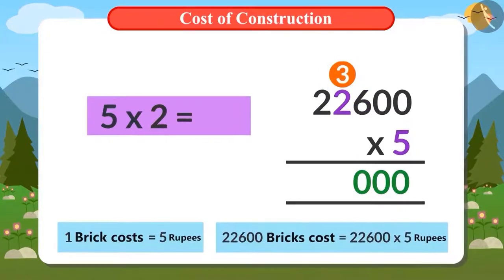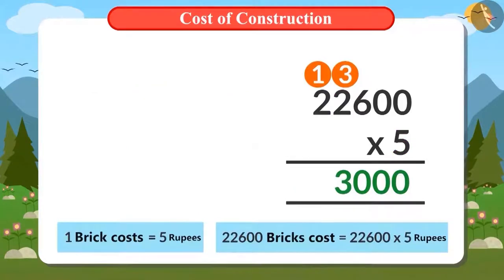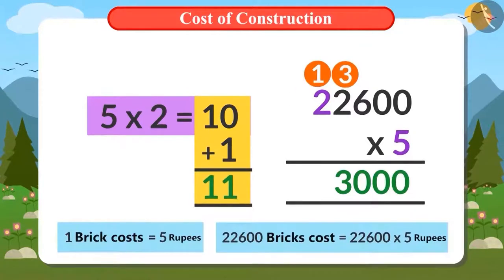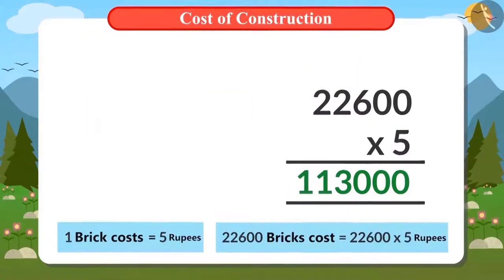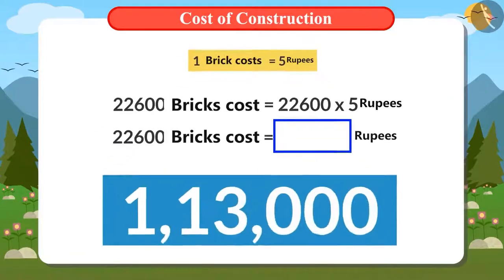Next, 5 is multiplied by 2, giving 10. Adding the carryover of 3 gives 13. The ones and tens digits are placed at their designated positions. Then 5 is multiplied by 2 again, giving 10. Adding the carryover of 1 gives 11. With no more digits to multiply, we write 11. The answer of multiplying 22,600 by 5 is obtained.